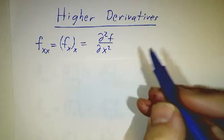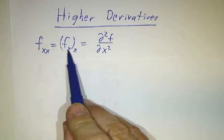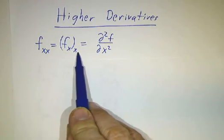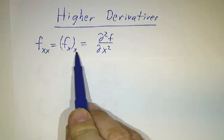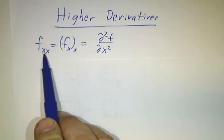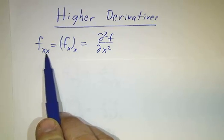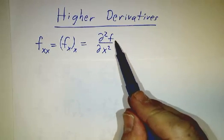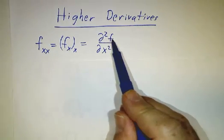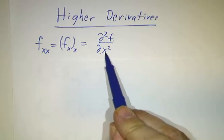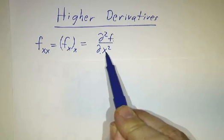If you've got a function f, you can take its partial with respect to x and get a new function. Then you can take a derivative with respect to x again and get a new function. The notation for that is f_xx, meaning we take a derivative with respect to x and then with respect to x. Another notation is partial squared f over partial x squared — the 2 means you're taking two derivatives with respect to x.